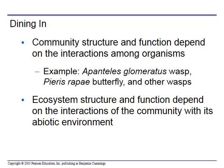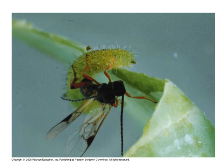Community structure and function depend on the interactions among organisms. When we look at a community, it has to be something close enough where these organisms interact. Ecosystem structure and function depend on the interactions of the community with its abiotic environment. The main difference between community and ecosystem is that ecosystems include things like the rocks, the weather, the soil. A community looks at just the living organisms and how they interact.